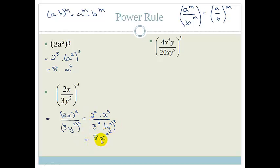2 cubed is 8, x cubed, all over 3 cubed is 27, that's 27, y to the 2 times 3, which is 6.